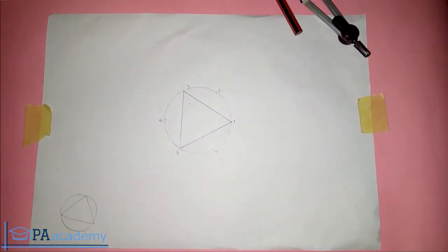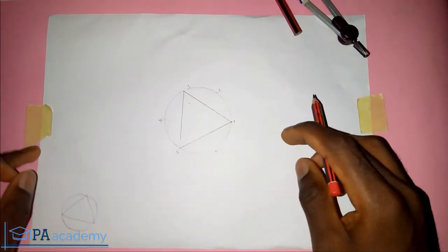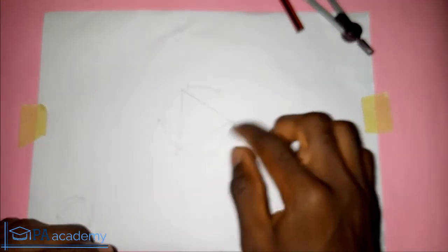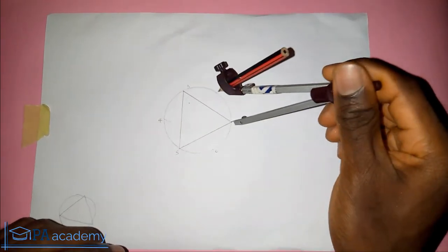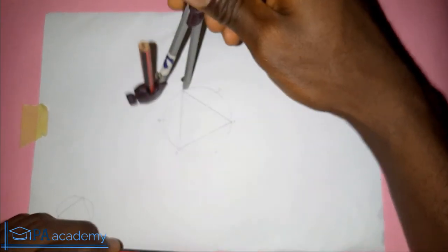So that is it, you've been able to inscribe an equilateral triangle inside the circle. You can see it's very simple. So what you just do, you just draw your circle. So the same radius you use in drawing your circle, just pick that same radius and the point on your circumference. Just bisect it three times, just mark out that point.